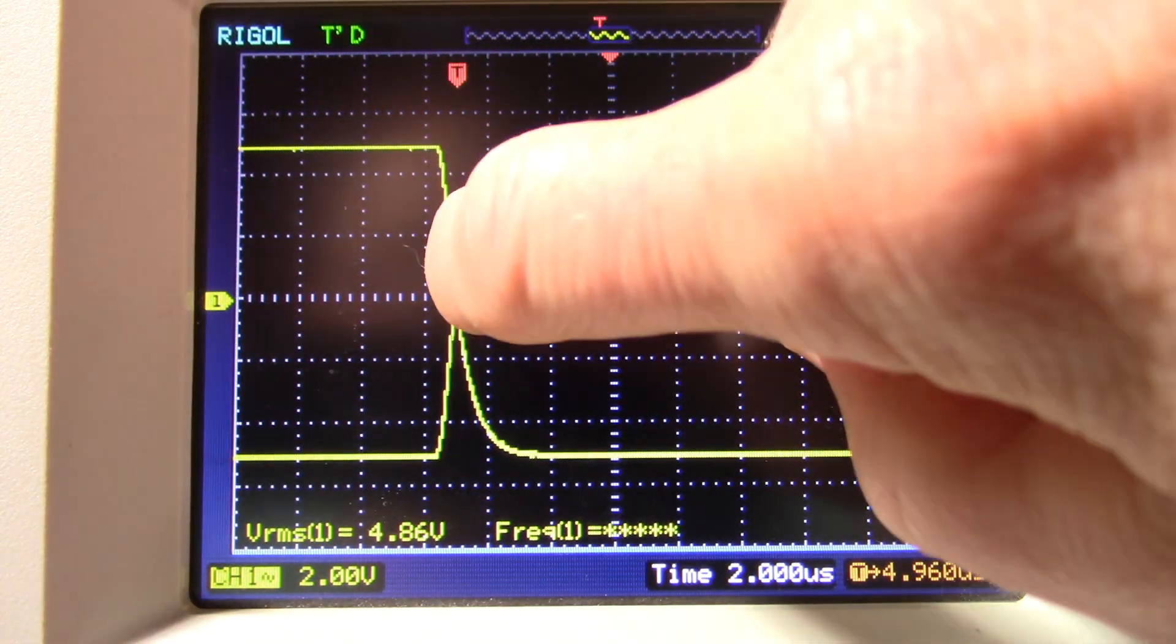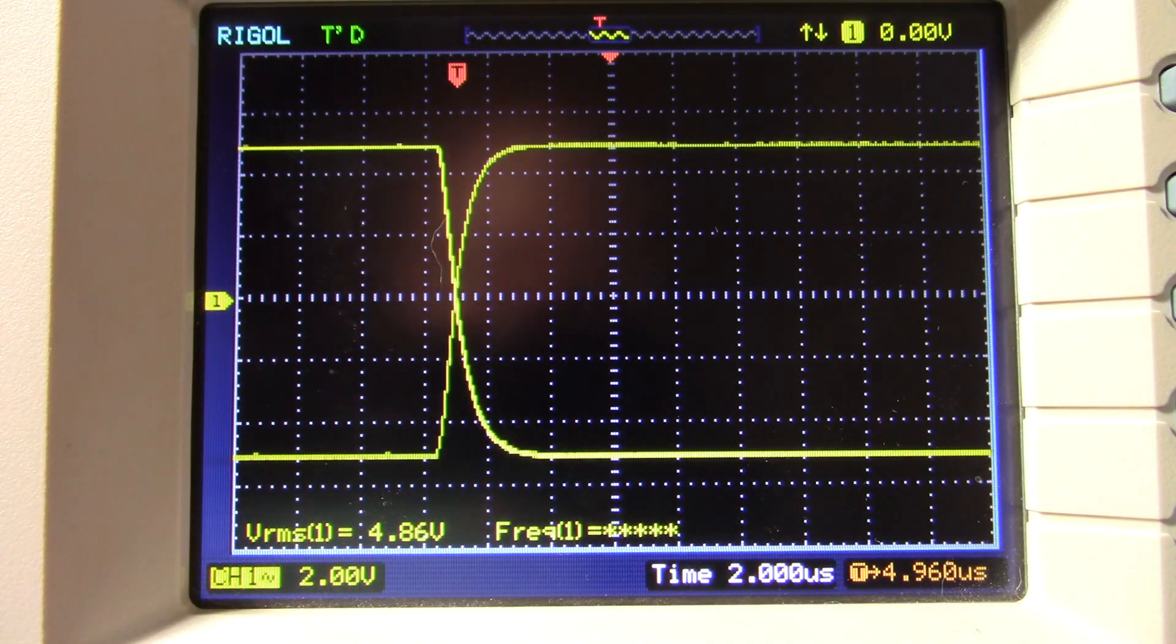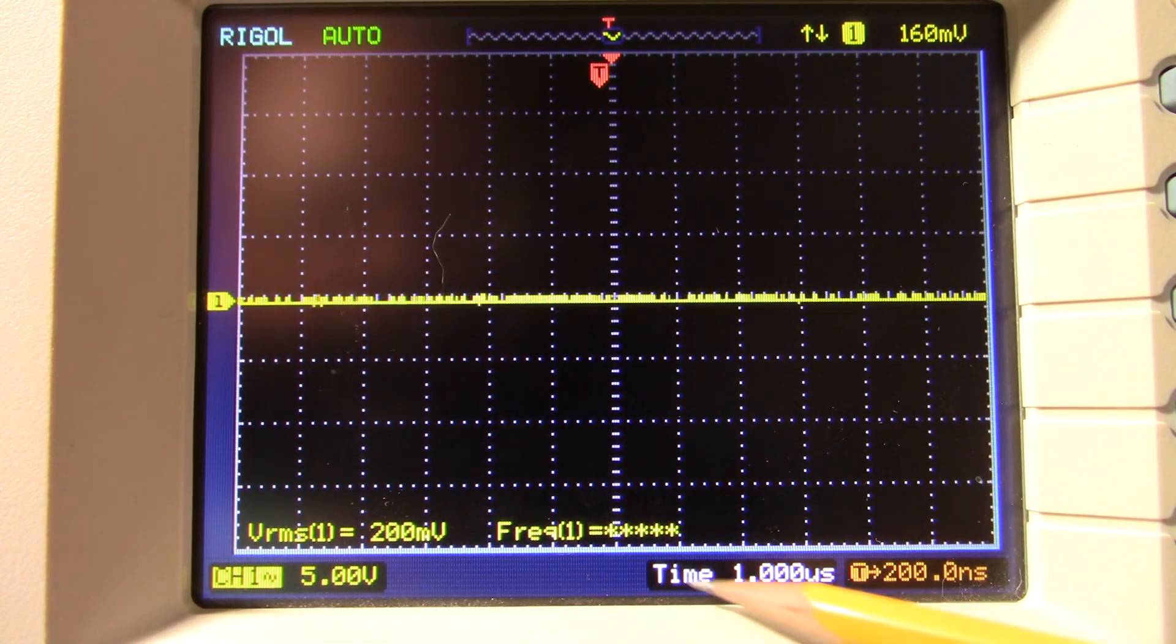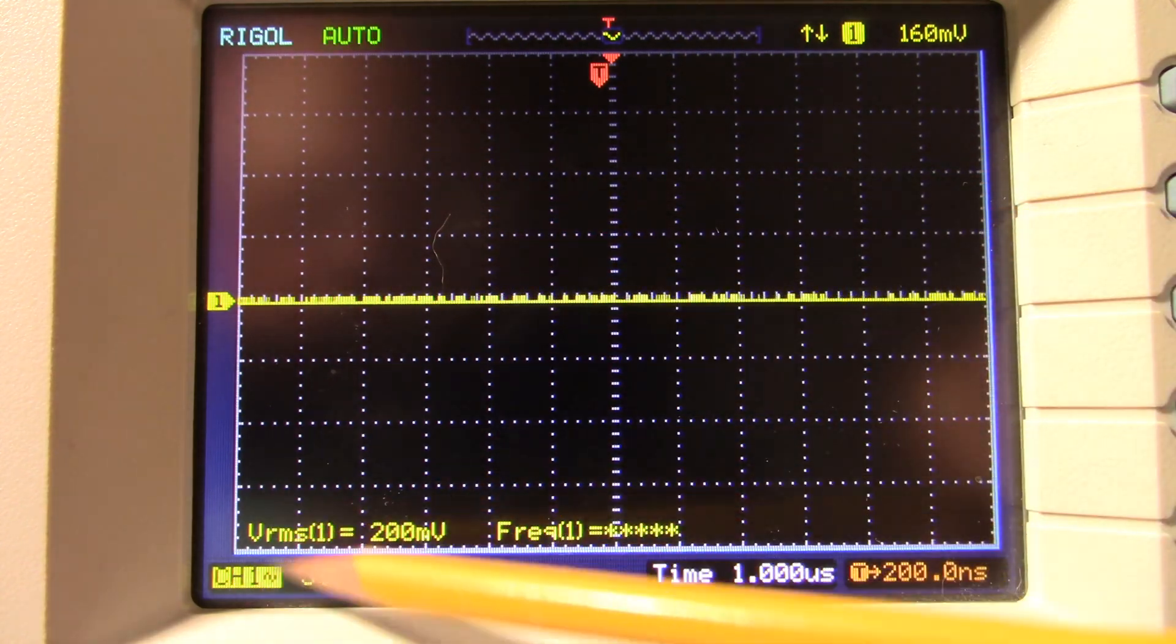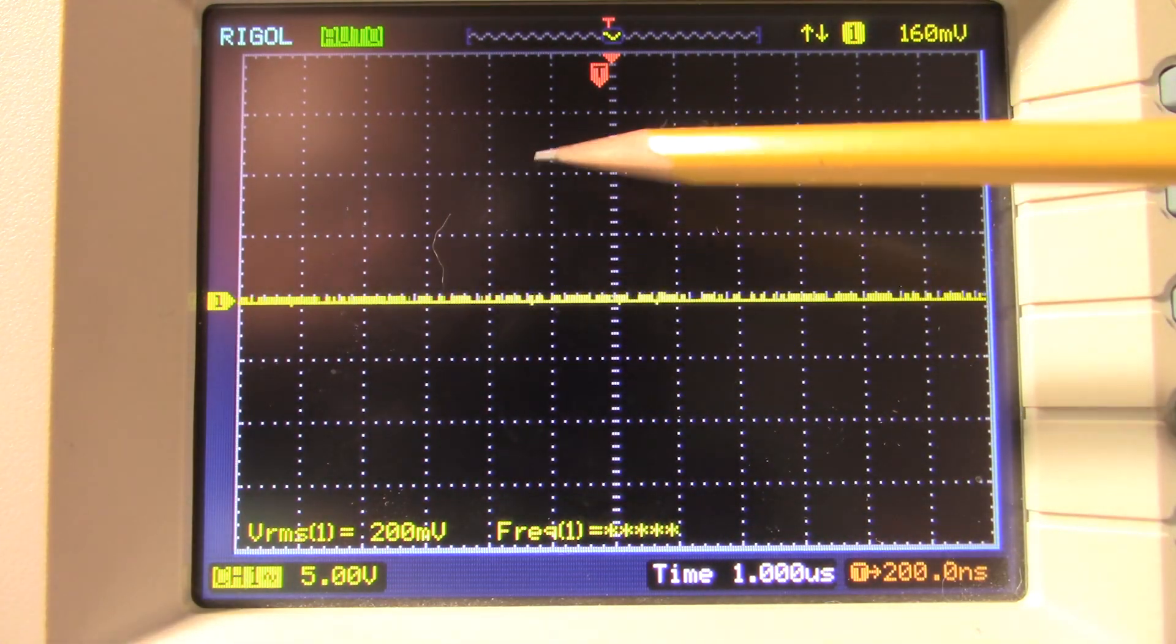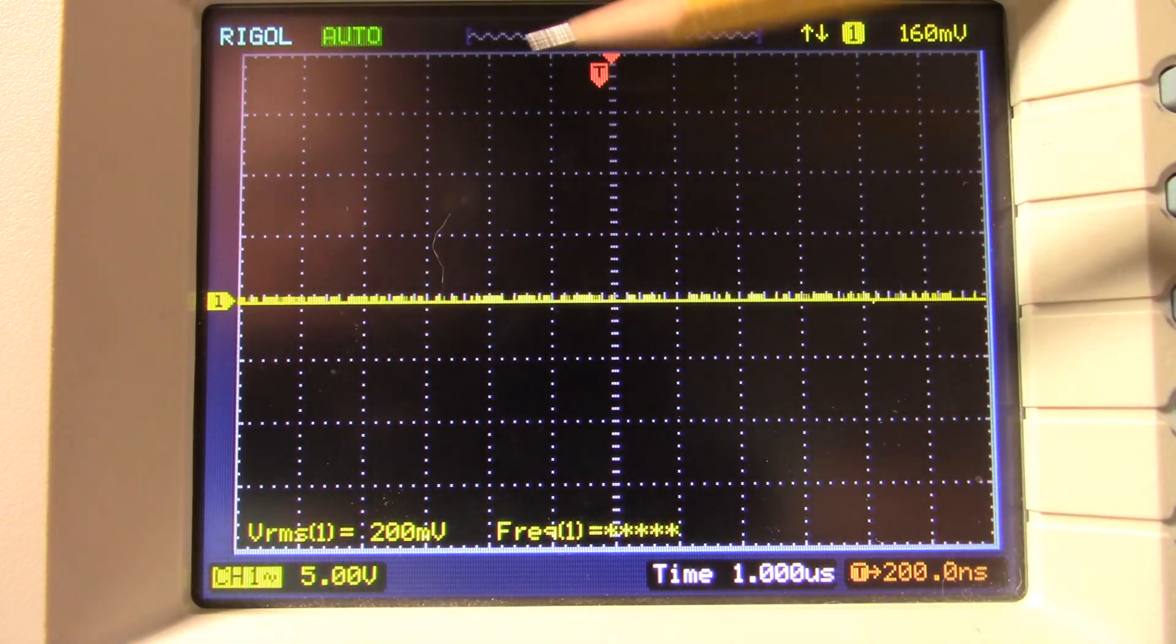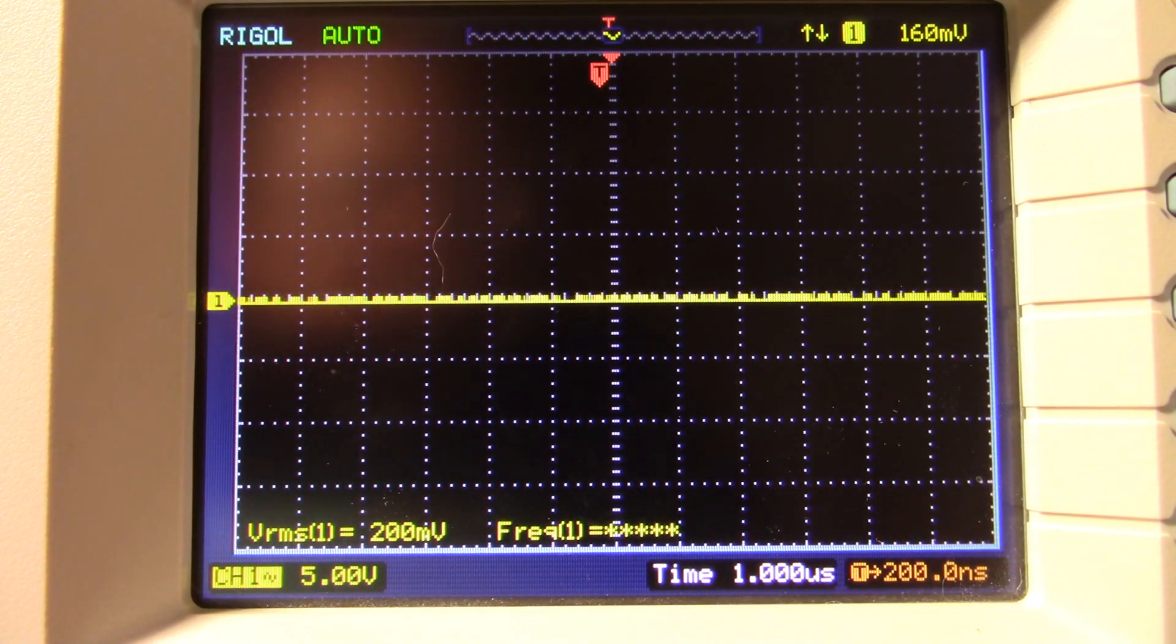Another thing you might notice is the slew rate is starting to drop, because you can start to see that X shape. The amplifier is real quick on the switch off, but on the switch on, you're getting kind of a rounded edge there. It's just band limited somewhat. However, I want to know what the slew rate of the amplifier is.